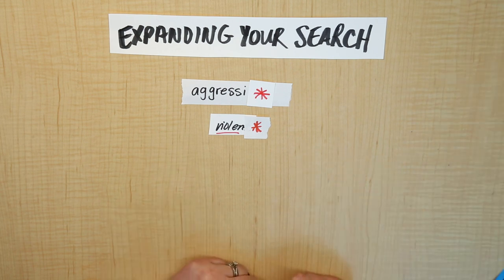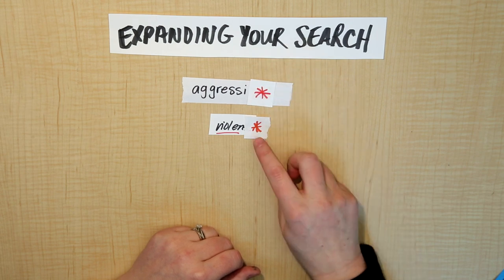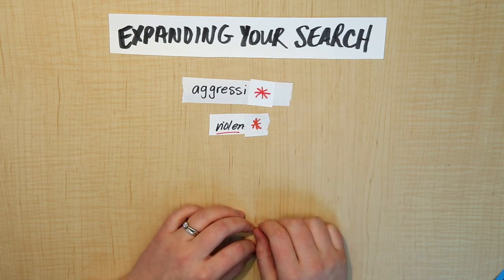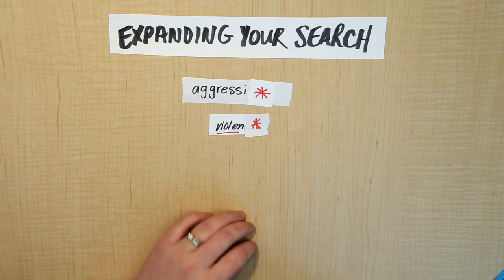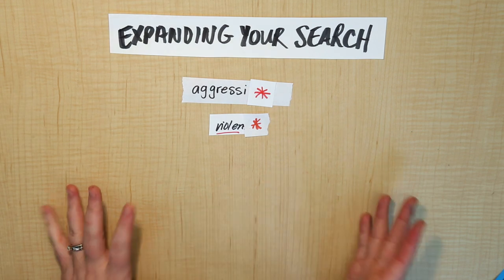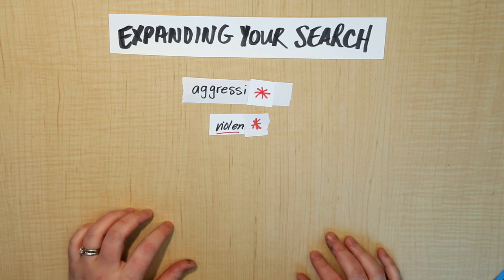That's called truncation. So the two techniques, using AND and OR, and truncation, which is using the star or a wildcard, should be able to increase your search results and expand your search. Now we'll take a look at a quick screencast showing you how to do these in PsycINFO.